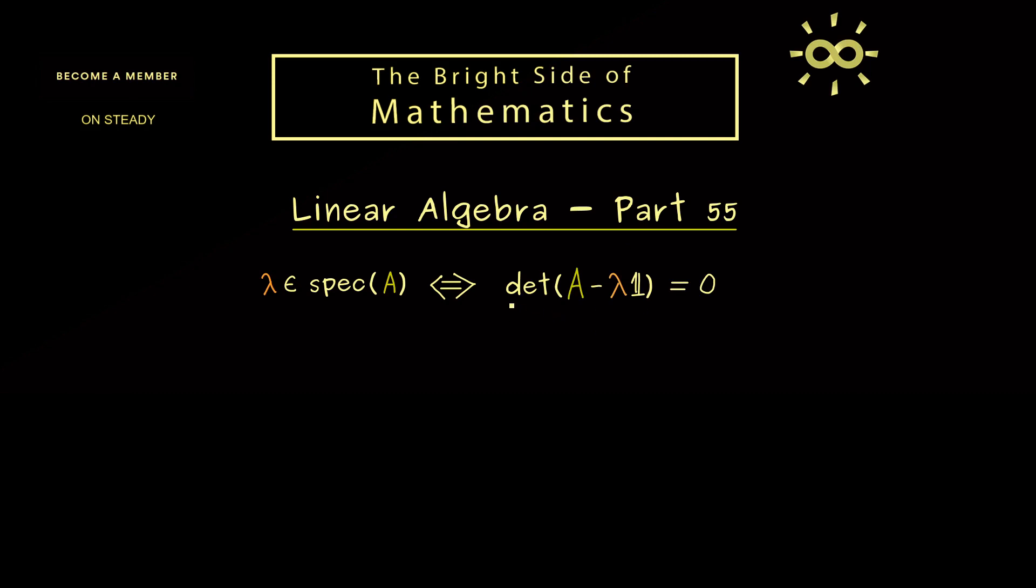In the last video we have proven one important fact for the characteristic polynomial, namely if A is an n times n matrix, then this is a polynomial of degree n. Therefore we can use general facts about polynomials of degree n and say something about the eigenvalues.